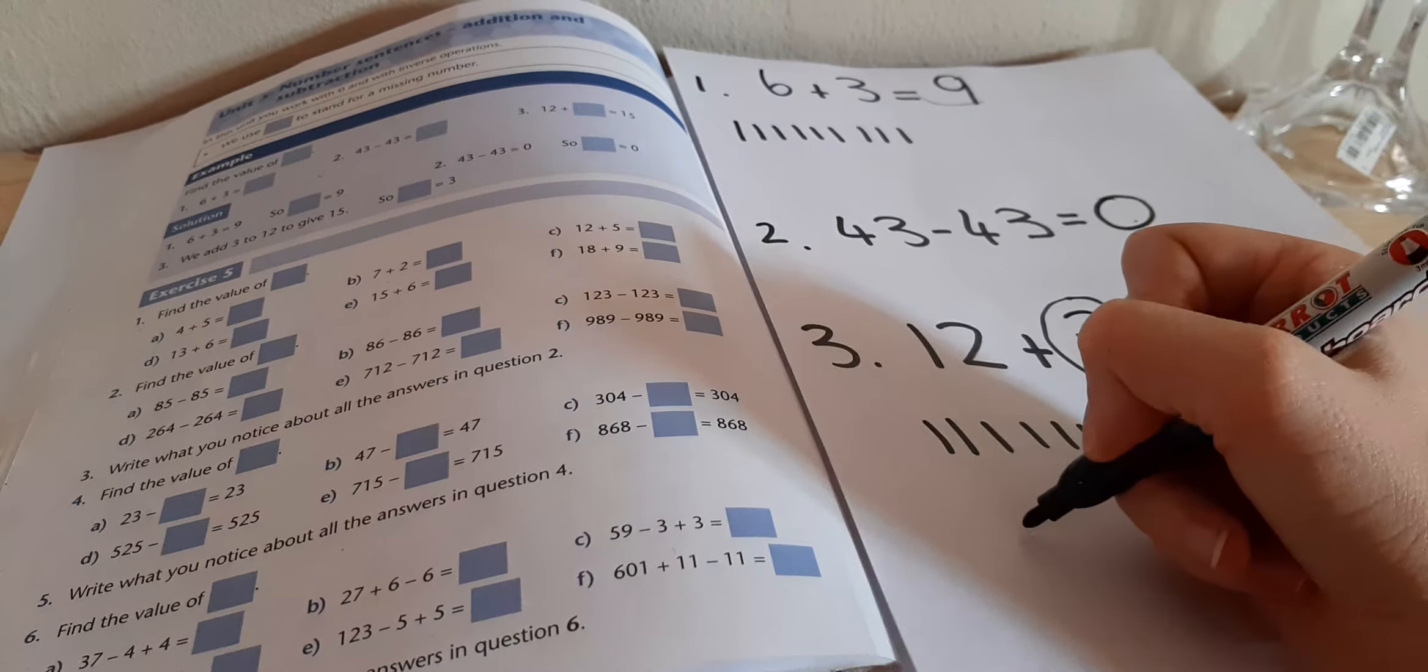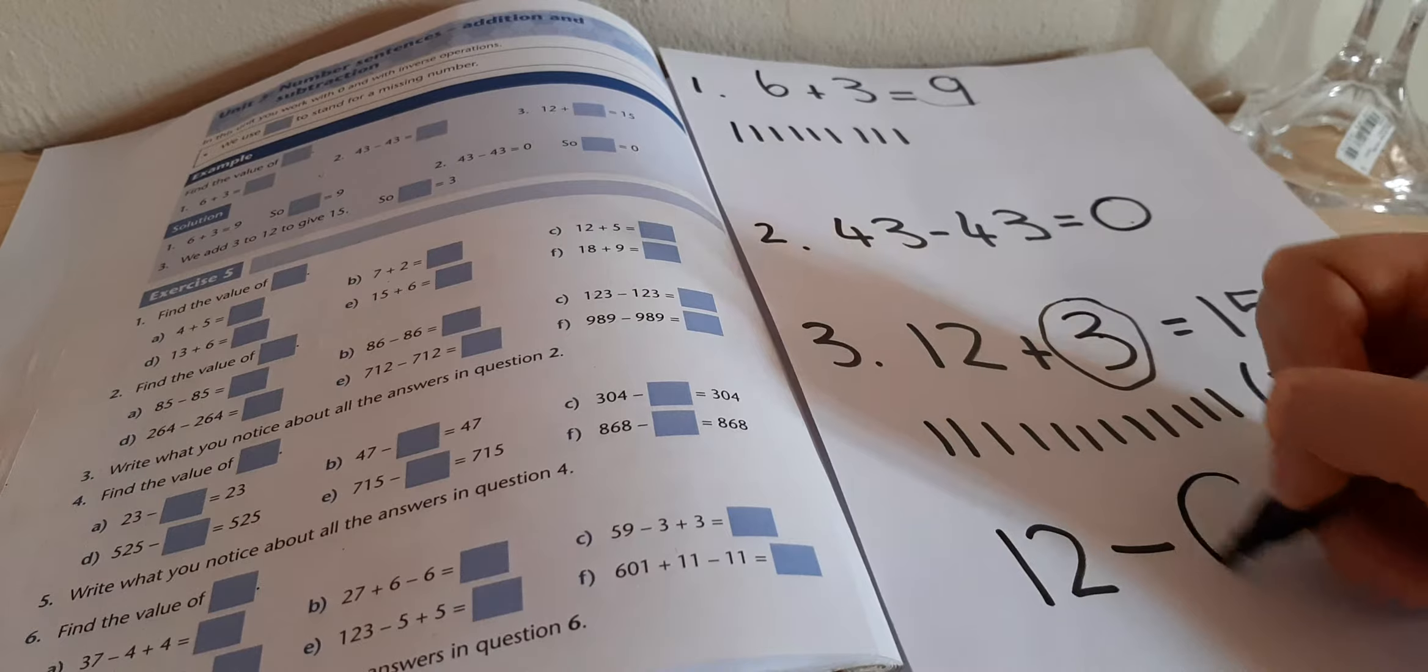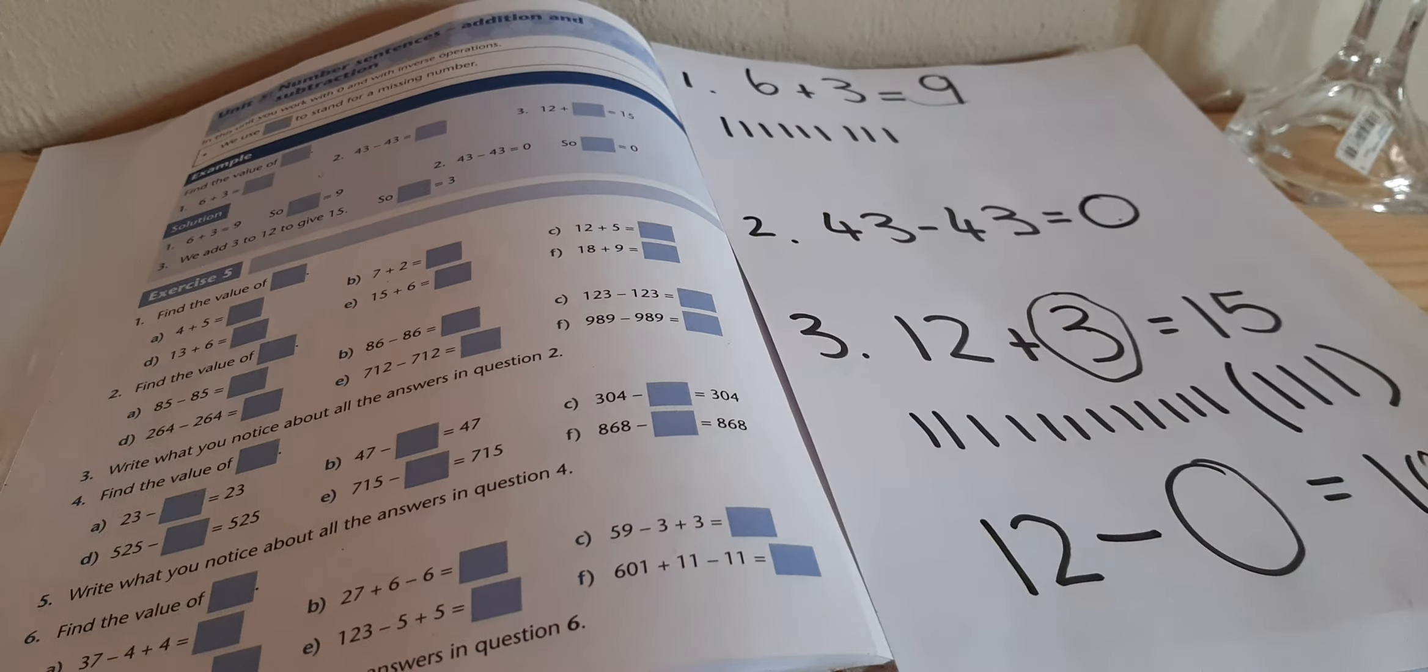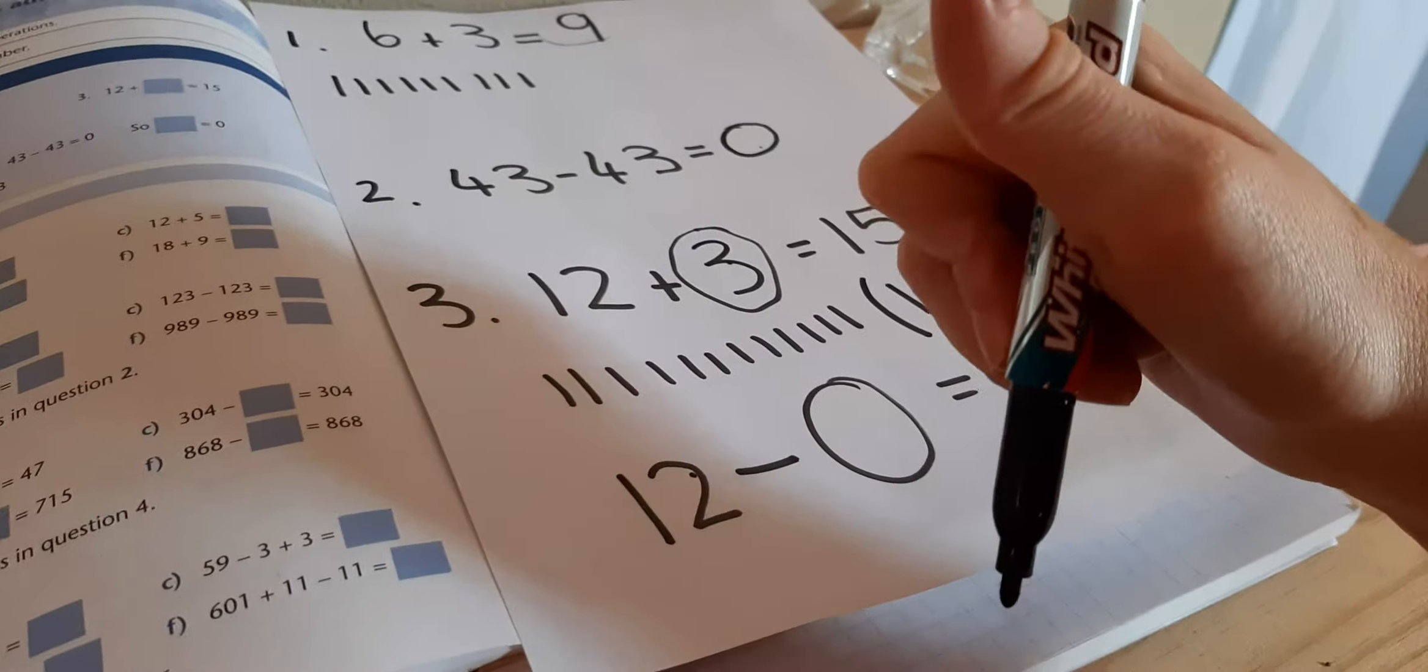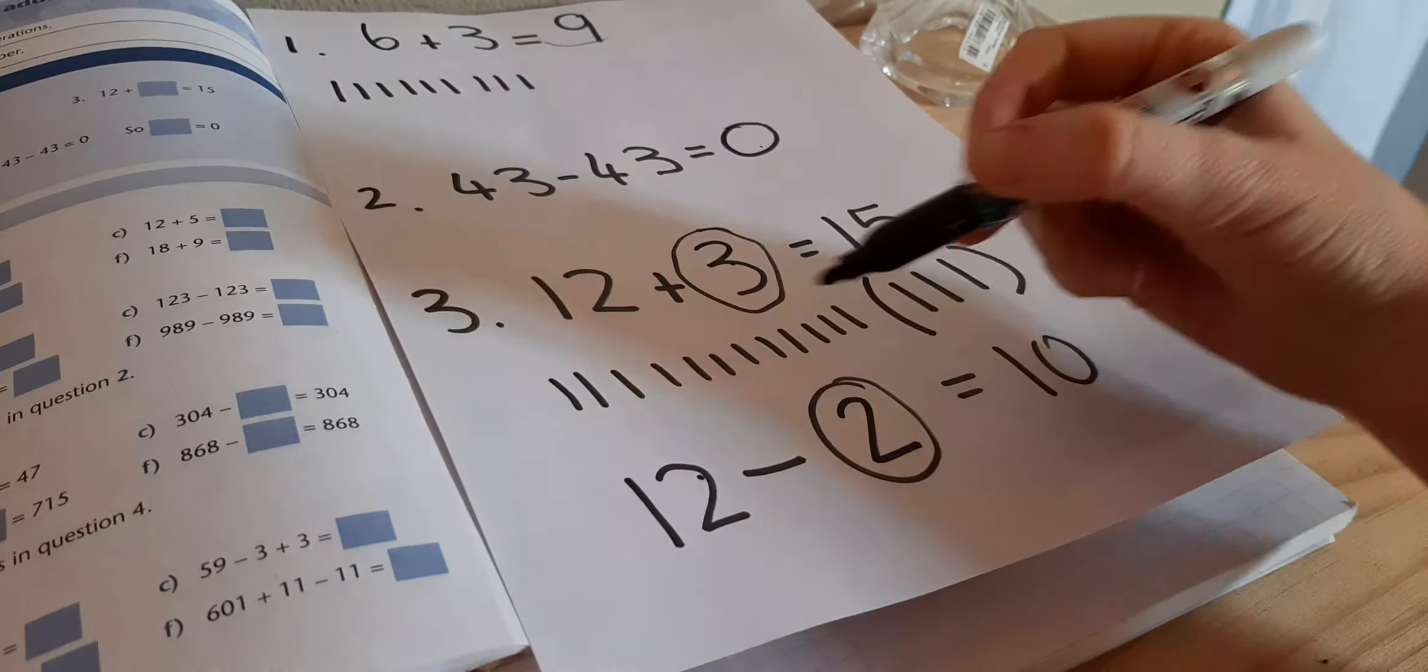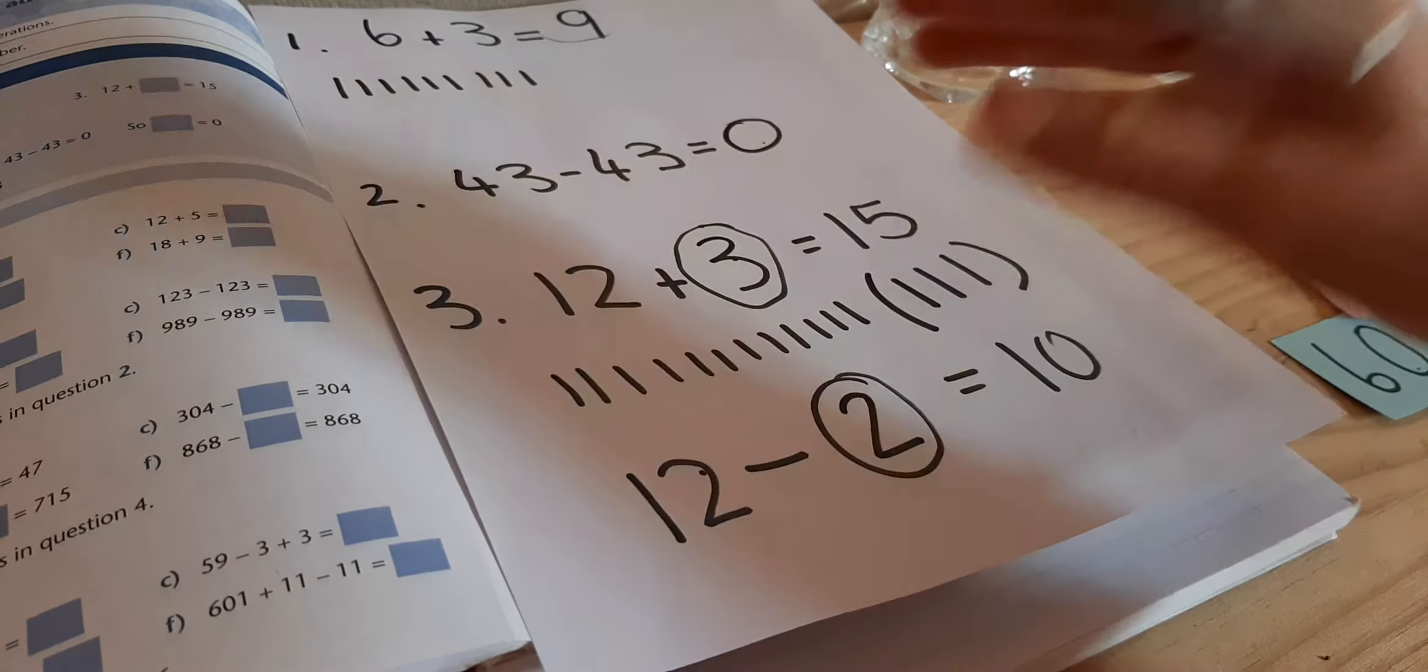For example, if I had to say 12 minus blank is equal to 10, you then have to minus in your head. And so what is the difference between 12 and 10? 12, 11, 10. So the answer would be 2. So 12 minus 2 is 10. You would have to fill those blanks in.